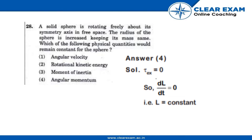Hello. Today's question is: a solid sphere is rotating freely about its symmetry axis in free space. The radius of the sphere is increased, keeping its mass the same. Which of the following physical quantities would remain constant for the sphere?